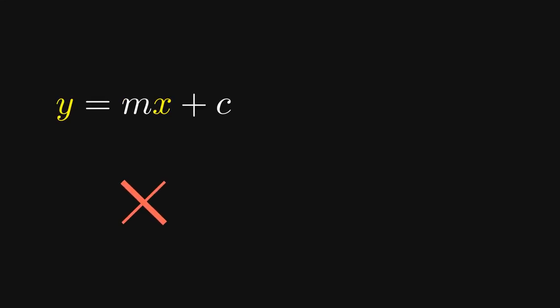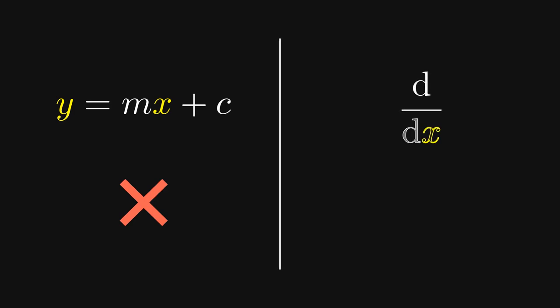This famous equation of a line is not actually linear. On the other hand, this curvy operation turns out to be linear.